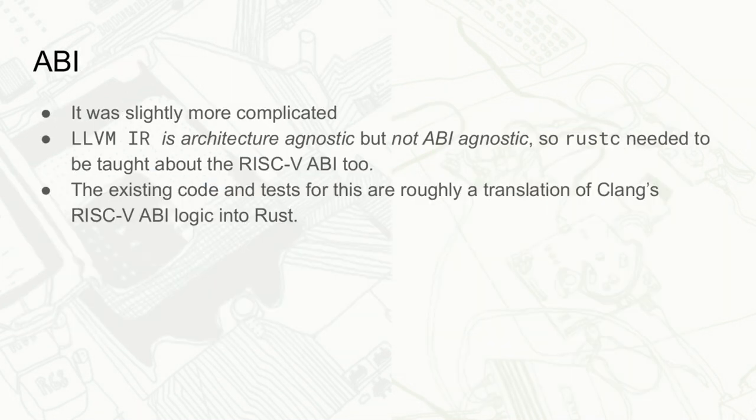The ABI support wasn't shown in that pull request because it was already in Rust. ABI — Application Binary Interface — specifies how different machine code units interoperate together, covering things like system call conventions.